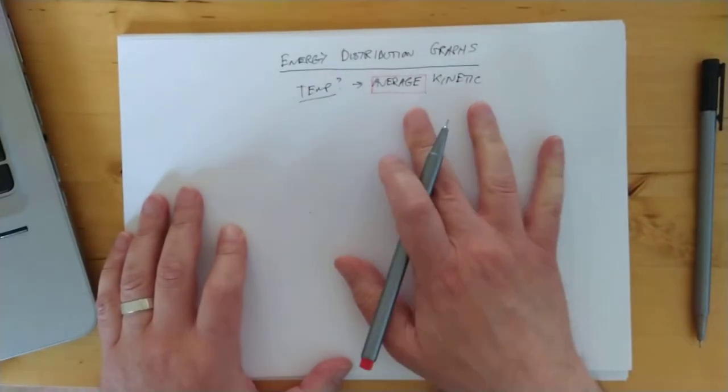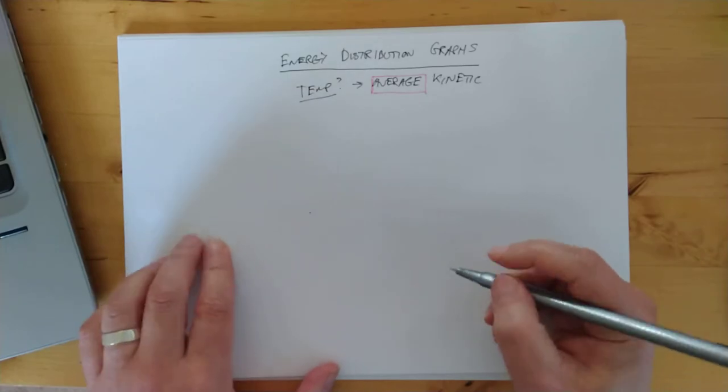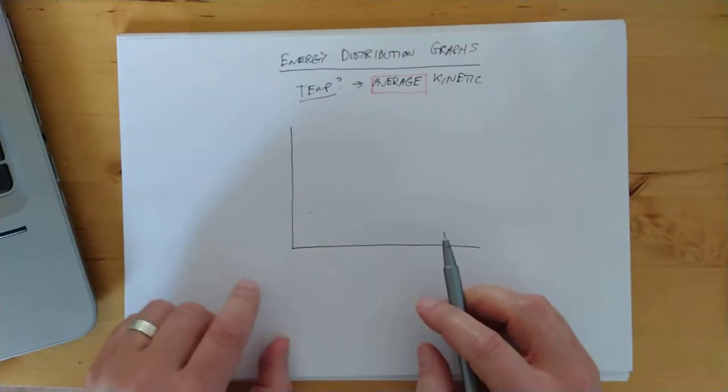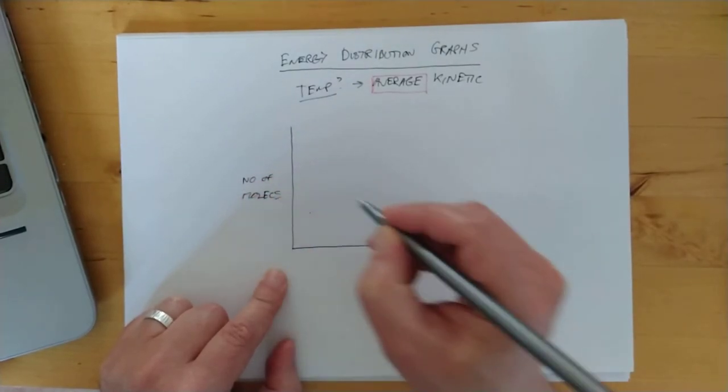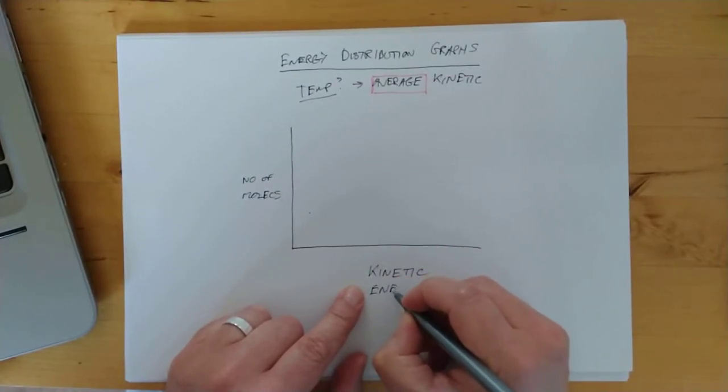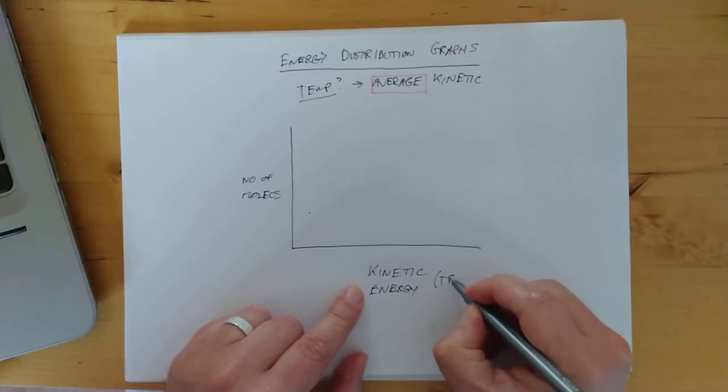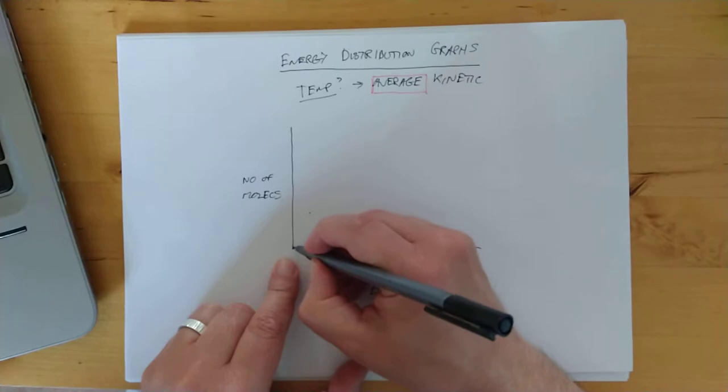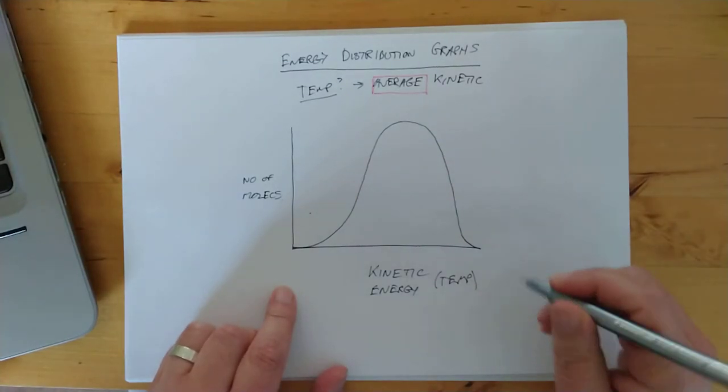The brighter amongst you might already have sussed the answer to my question about evaporating water. Because it turns out that if you plot a different graph now, I did say energy distribution graphs. So if we plot number of molecules against kinetic energy this time, in other words temperature. So effectively this is low temperature, this is high temperature. You get a curve that looks like this. Now this is called a normal distribution curve. It applies to all sorts of things, interestingly. It applies to intelligence, it applies to height.